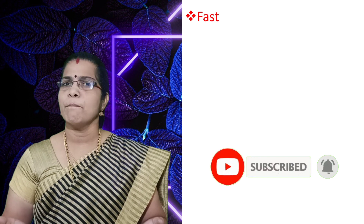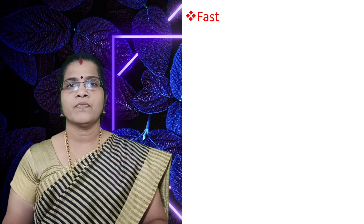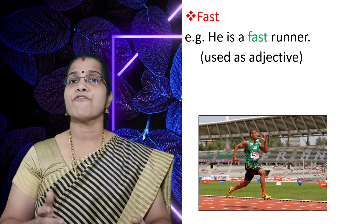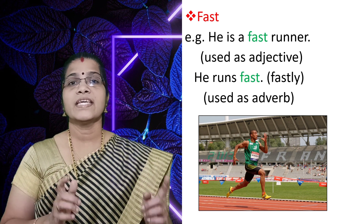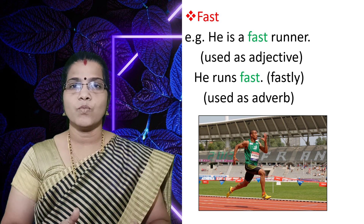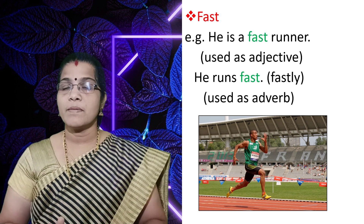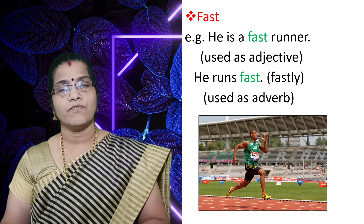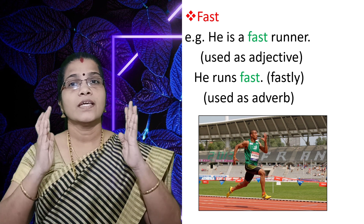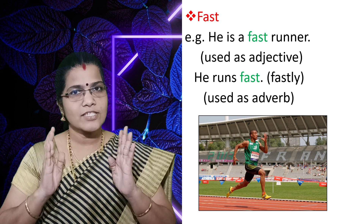Now let's look at another adverb: fast. To be very frank, many of my students use fast with -ly and say fastly. In fact, there is no word fastly that you can find in an English dictionary. Fast is used both as an adjective and as an adverb. So you can say he is a fast runner — fast is an adjective there. At the same time, he runs fast — it is used as an adverb. So remember, fast is both an adjective and an adverb, and there is no -ly for fast. Never say he runs fastly — it is always fast.